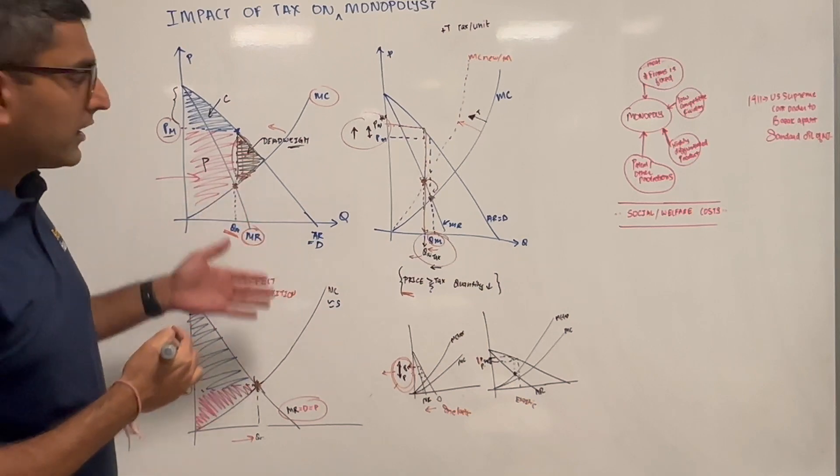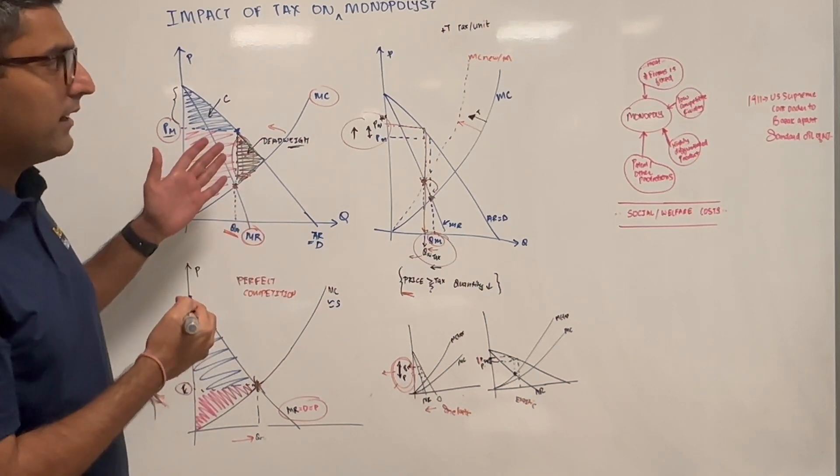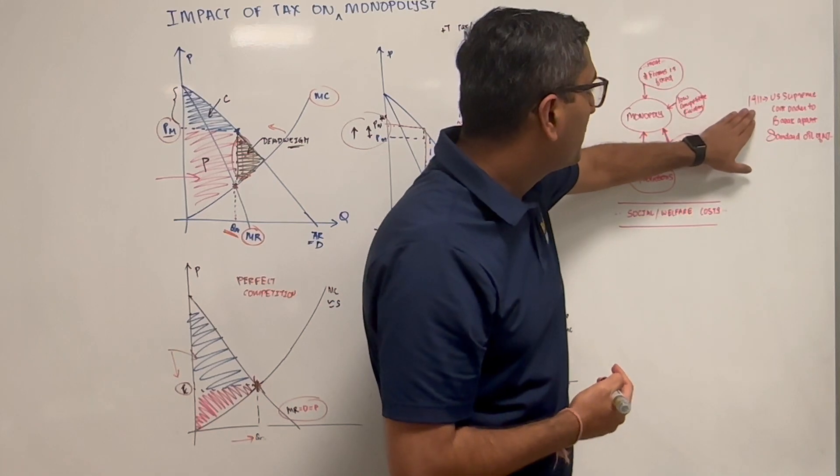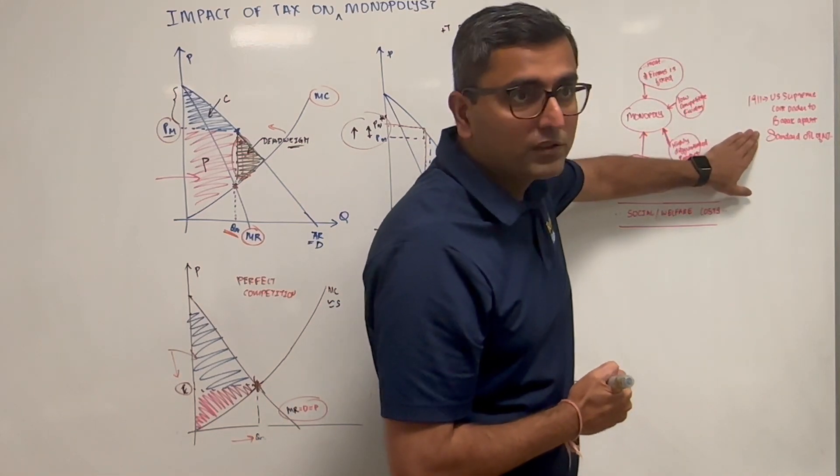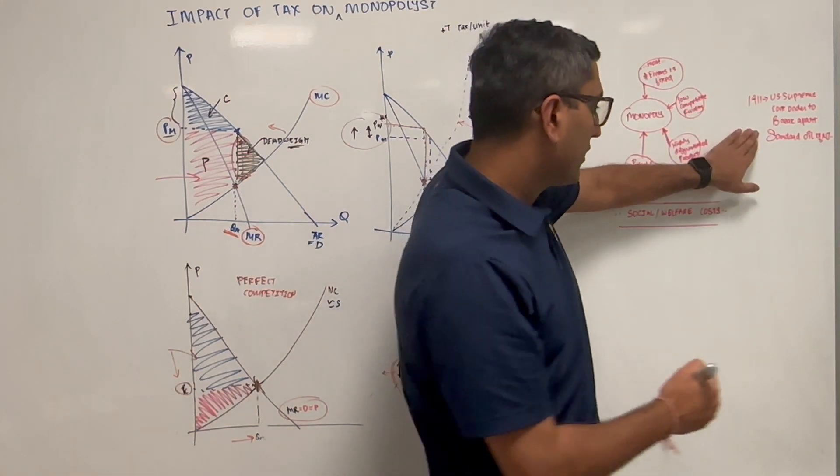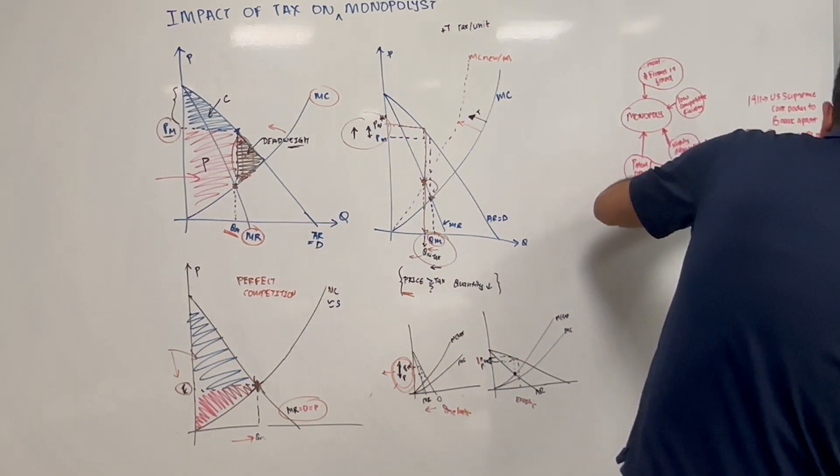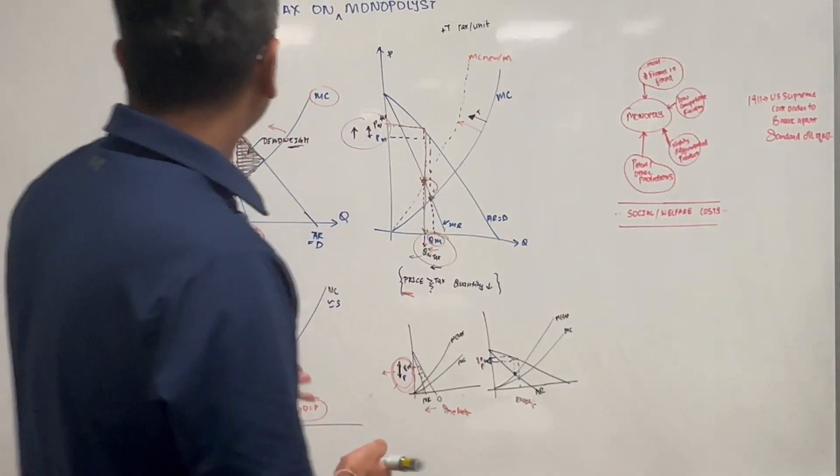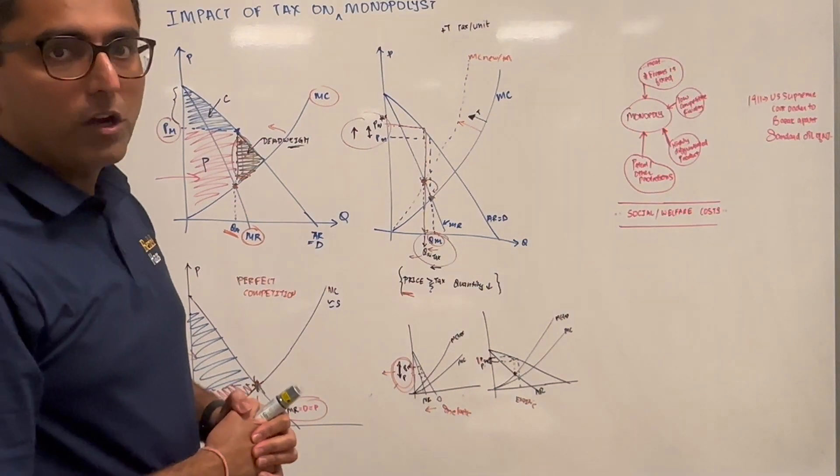That's what happened—one example was a US Supreme Court order that broke down Standard Oil into a much lower number of substitutes. So that is the impact of tax on monopolists.